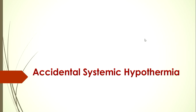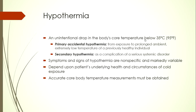Hypothermia is an unintentional drop in the body's core temperature below 35°C (95°F). It is of two types: primary or accidental hypothermia, from prolonged exposure to extremely low ambient temperatures in a previously healthy individual; and secondary hypothermia, when some co-morbid condition predisposes the person to hypothermia. Symptoms and signs are non-specific and highly variable, depending on the patient's underlying health and circumstances of cold exposure. Accurate core temperature measurement using rectal or esophageal thermometers reading below 25°C is essential.